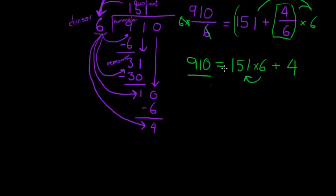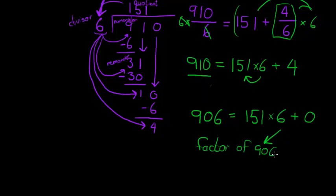Now, if 6 could divide into 910, if it was able to divide, we would call it a factor. Like, for example, if we had 906, that is 151 times 6. Now, we can see that there's a remainder of 0. When we have a remainder of 0, that 6 is called a factor of 906. That would be a factor of 906 because it can divide without a remainder.